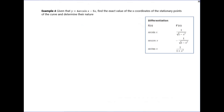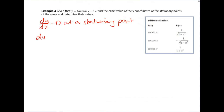For this example, we're given y = 4arcsin(x) - 5x, where the -5 is outside the arcsin. It asks for the exact x-coordinates of stationary points and to determine their nature. At stationary points dy/dx = 0. Differentiating: 4arcsin gives 4 · 1/√(1 - x²), and differentiating -5x gives -5. Set this equal to zero.